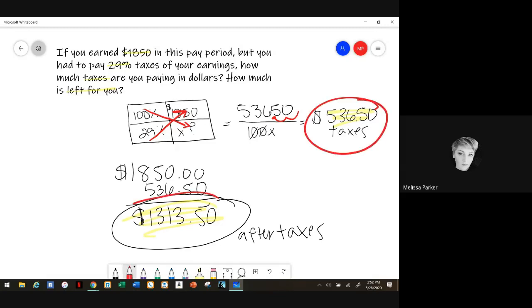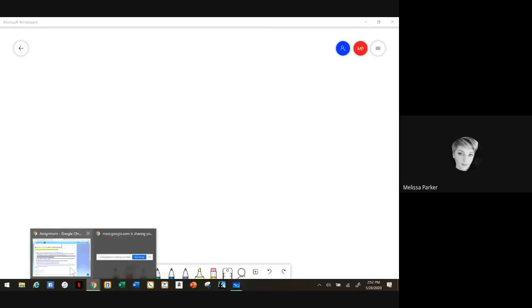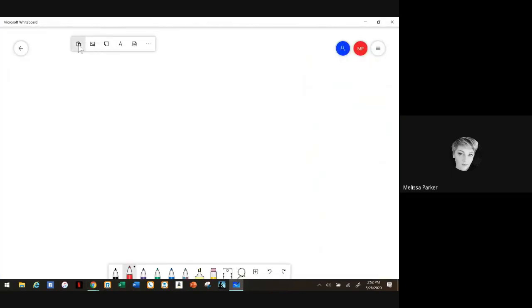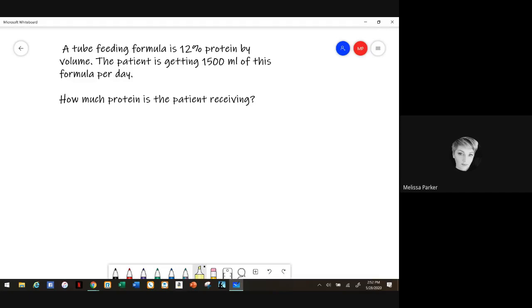So this is how much you would have leftover after taxes. So this is the taxes and this is how much is left over after. That was question two from lecture 16. Okay, let's go and get number three. So here we have a tube feeding formula that's 12% protein. The patient needs 1500 mls per day, so how much protein is the patient receiving per day. So anytime it asks for like the medication or the protein, that's going to usually be in grams, but if it says how much of the solution or the volume, it's going to be in ml.